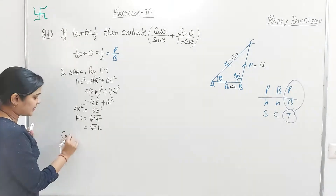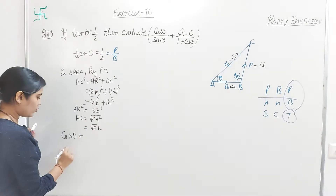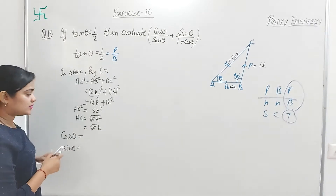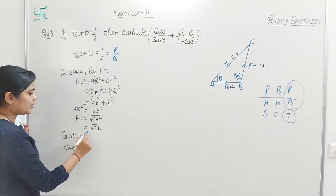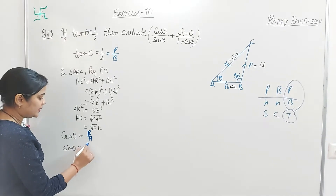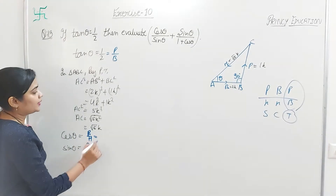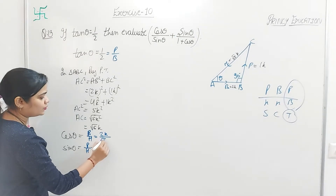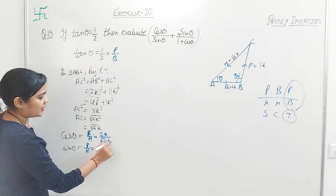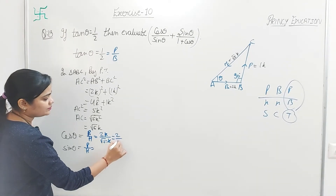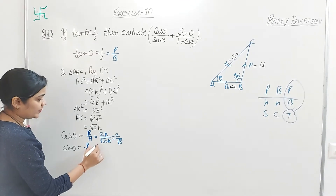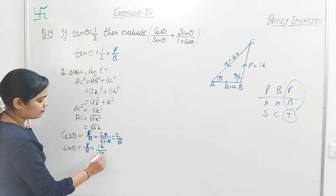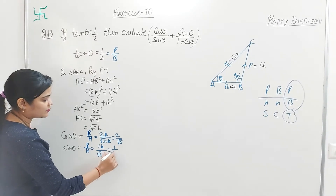Now find the values of cos θ and sin θ, since they are used in the question. By formula, cos θ equals base upon hypotenuse, and sin θ equals perpendicular upon hypotenuse. Base = 2k, hypotenuse = k√5, so k cancels: cos θ = 2/√5. Sin θ = 1k upon k√5, k cancels: sin θ = 1/√5.